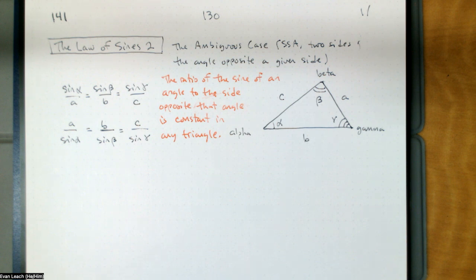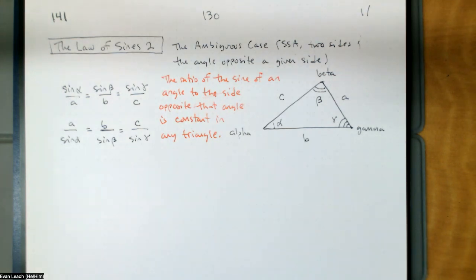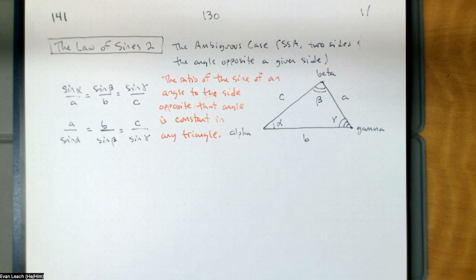We want to use the law of sines to solve triangles — that's what we're going to use it for. We're going to use the law of sines for triangulation, solving triangles. Specifically, we want to look at the ambiguous case. The ambiguous case is when I give you information about a triangle that consists of two sides and the angle opposite one of those sides.